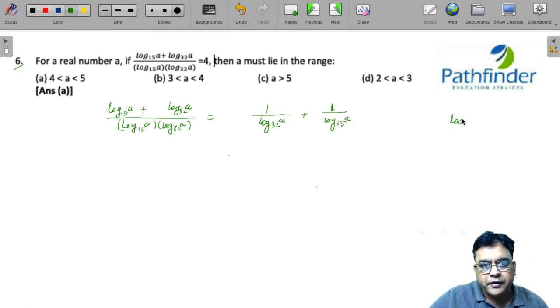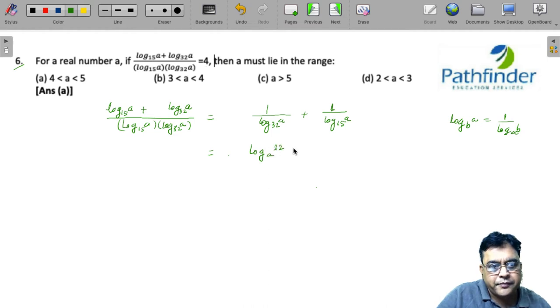Now, you must know one property: log of a to the base b is equal to 1 upon log of b to the base a. So, I can rewrite this: 1 upon log of a to the base 32 is nothing but log of 32 to the base a, plus this can be written as log of 15 to the base a,